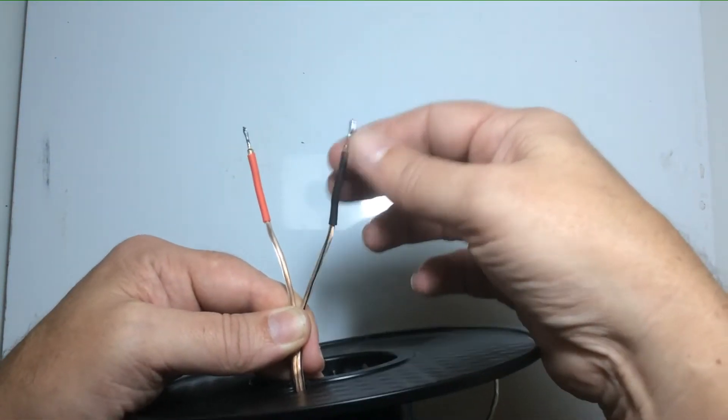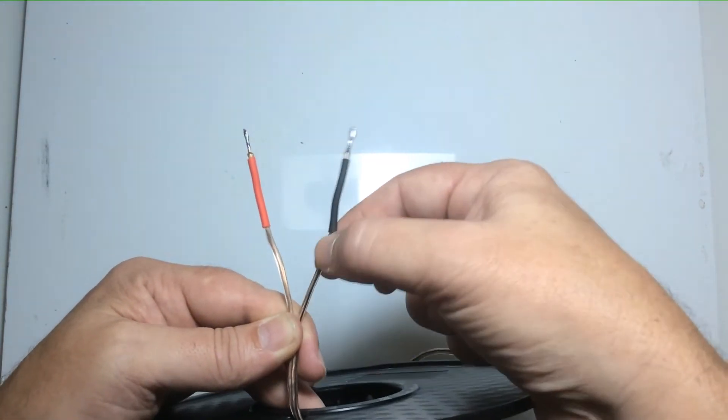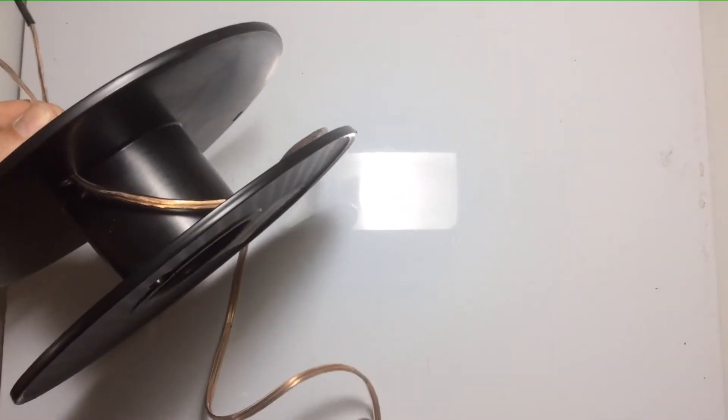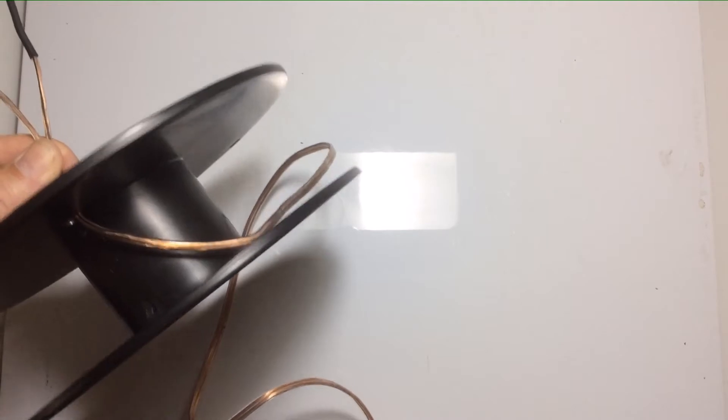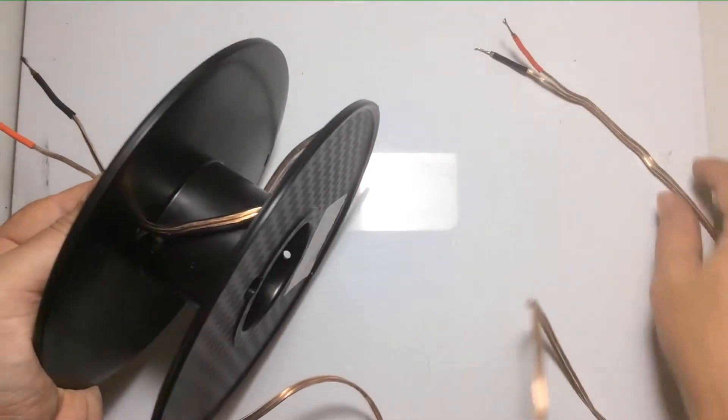One of these wires has a black stripe down it and the other one doesn't, so I've made it easier for us. I've put the heat shrink on the end of this one with the black striping, and then when we get to the other end I have done the same so that we can see where those connect on the schematic.